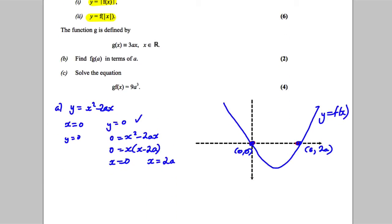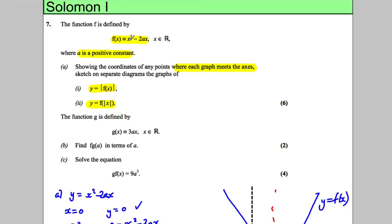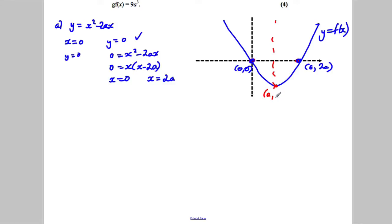We could easily find it if you wanted. You know that the minimum is going to be, because it's symmetrical, the minimum is going to be at point a, and if you substitute a into the original function, you get a² - 2a², which is -a².